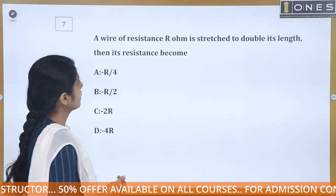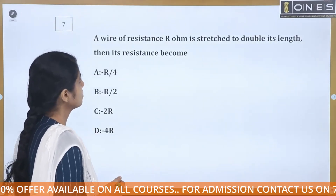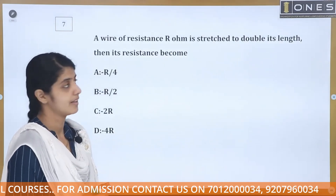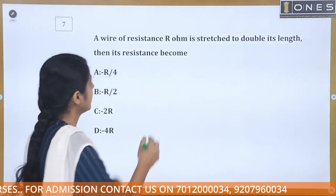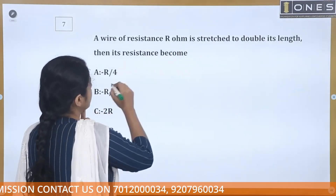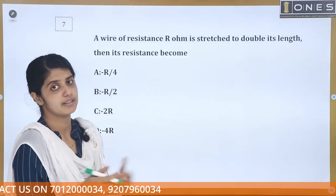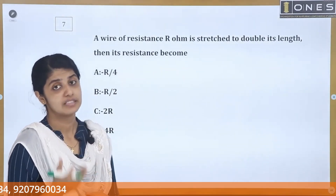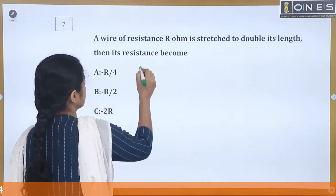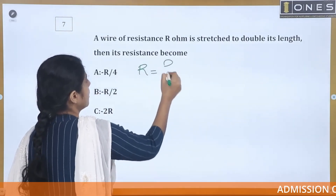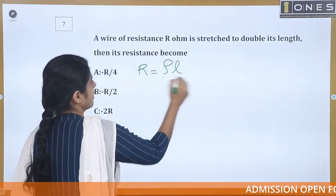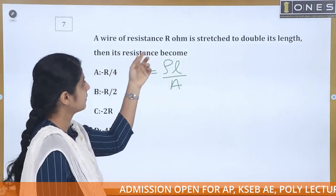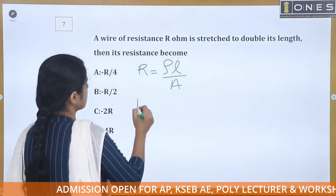The next question: a wire of resistance R ohms is stretched to double its length. Then its resistance becomes? The wire is stretched so the length is doubled, and the resistance changes. Resistance formula is R = ρL/A. The wire has resistance R ohm.